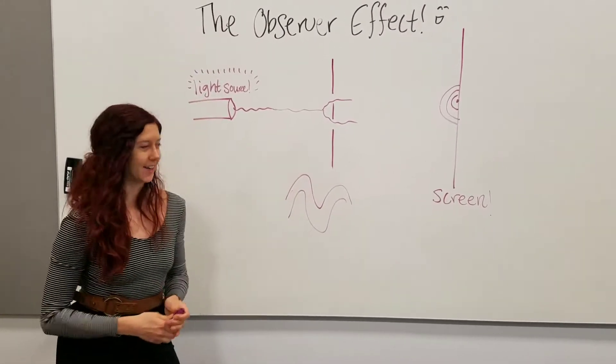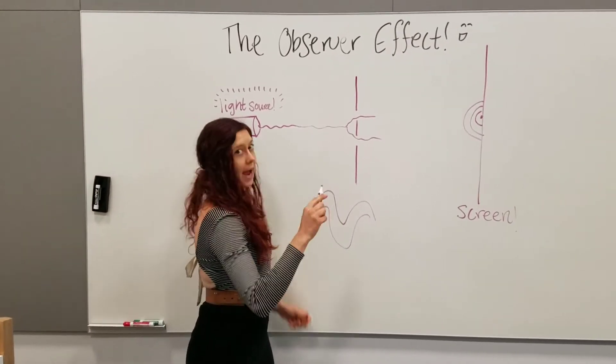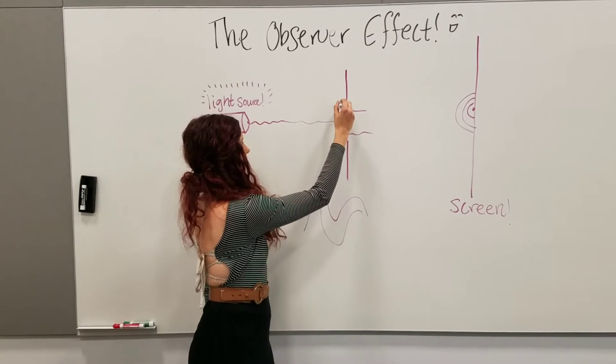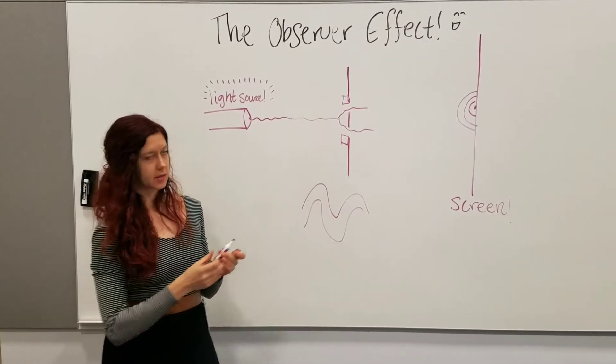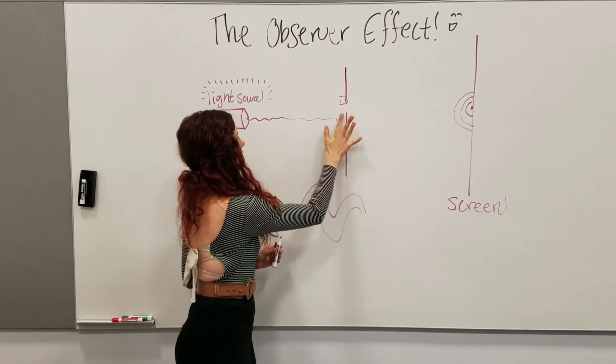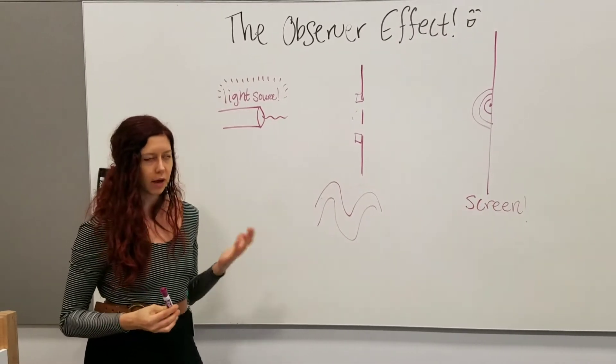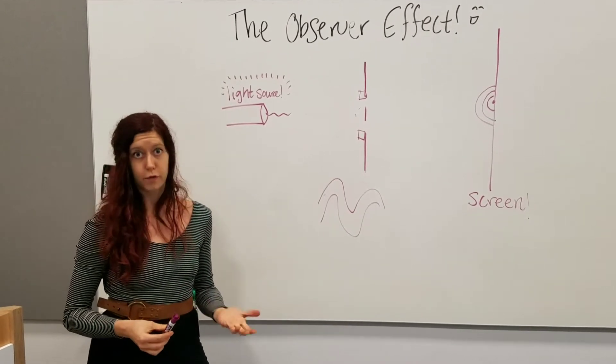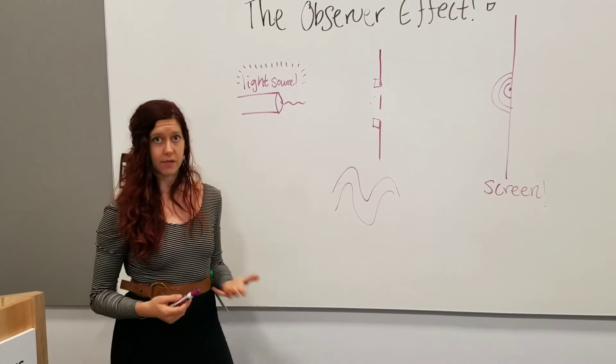But the tricky thing, and this is where it gets really weird, is when you add detectors at each of the slits. So now, basically what you're doing is you're asking, okay, I know that light is made out of particles called photons. So which slit are the photons going through at a given time?